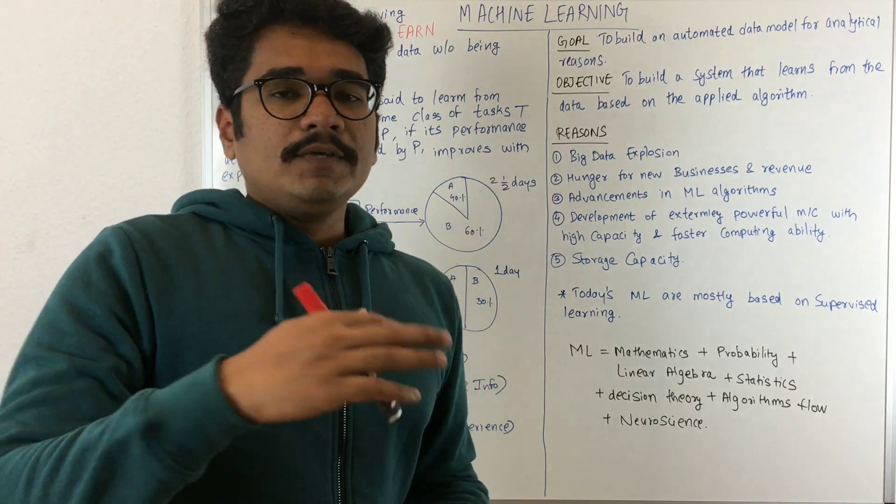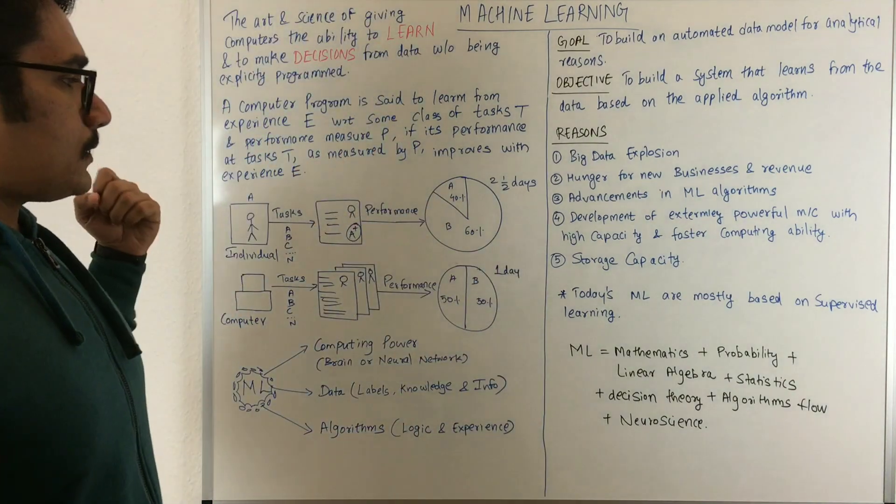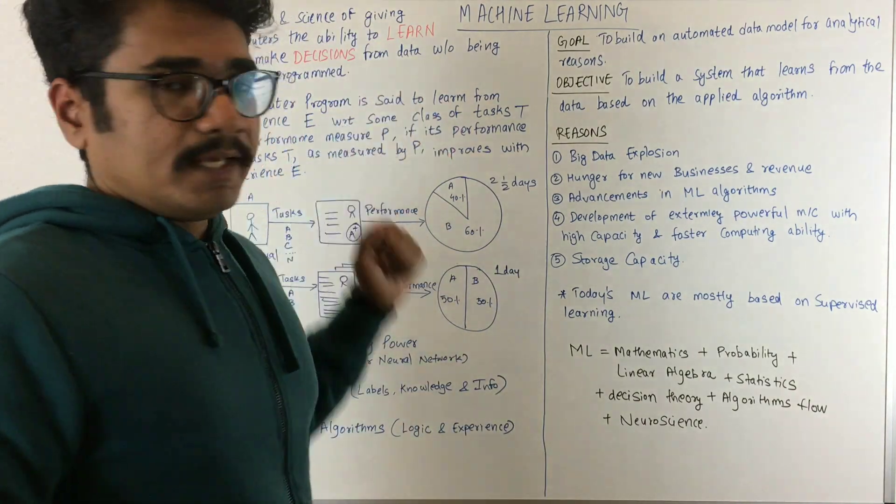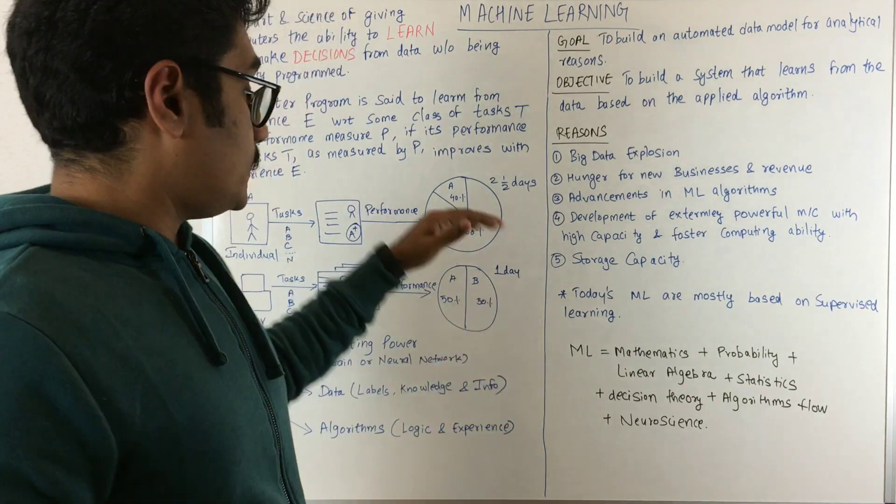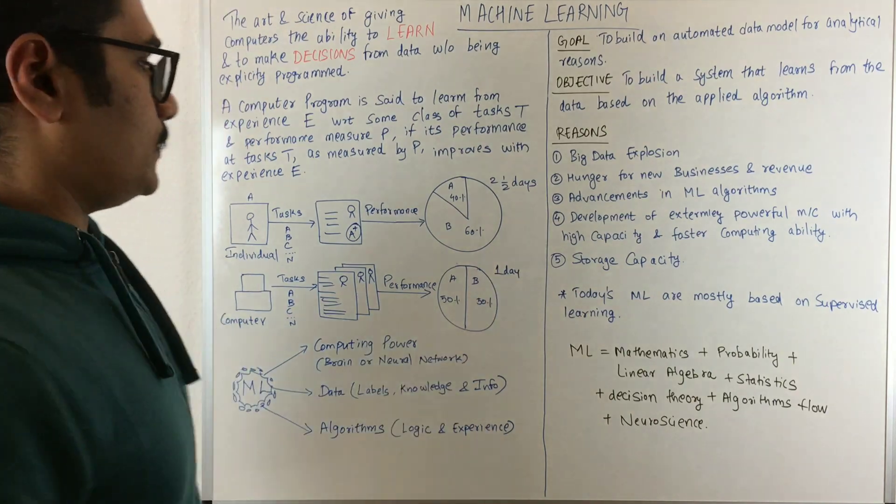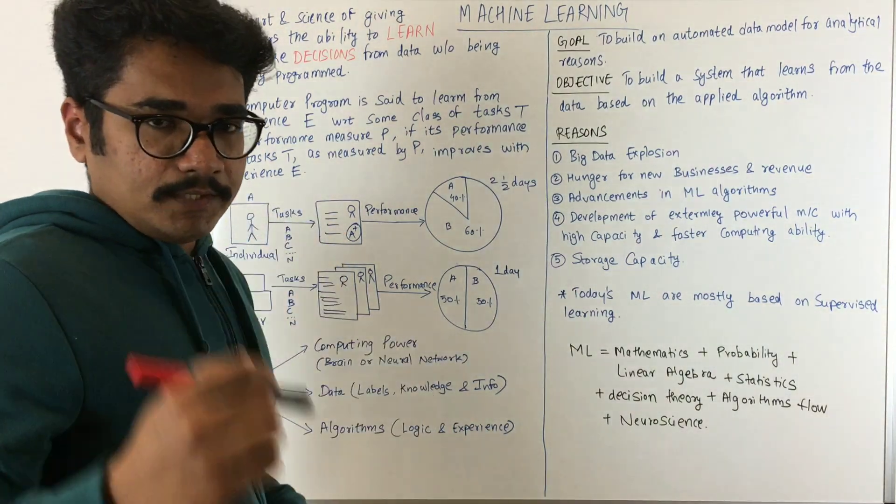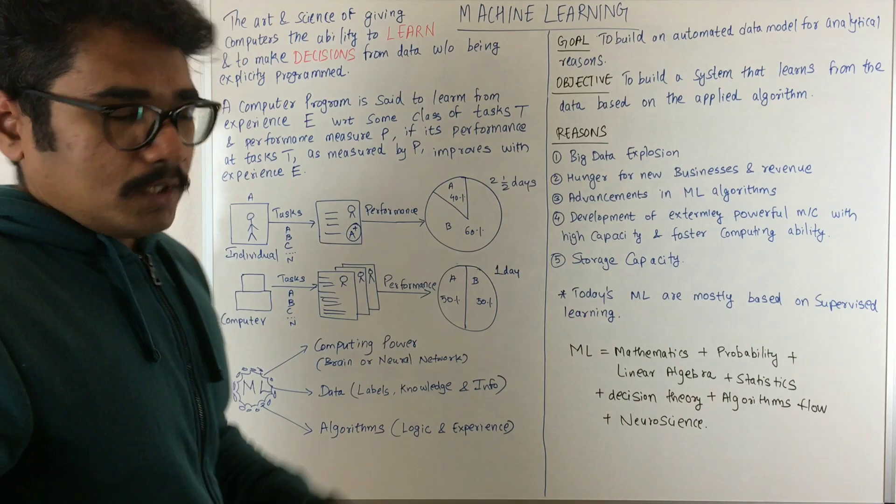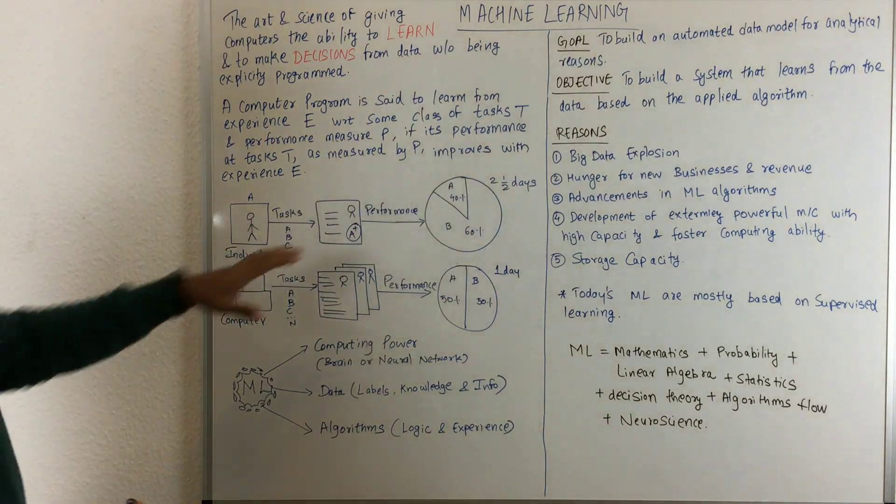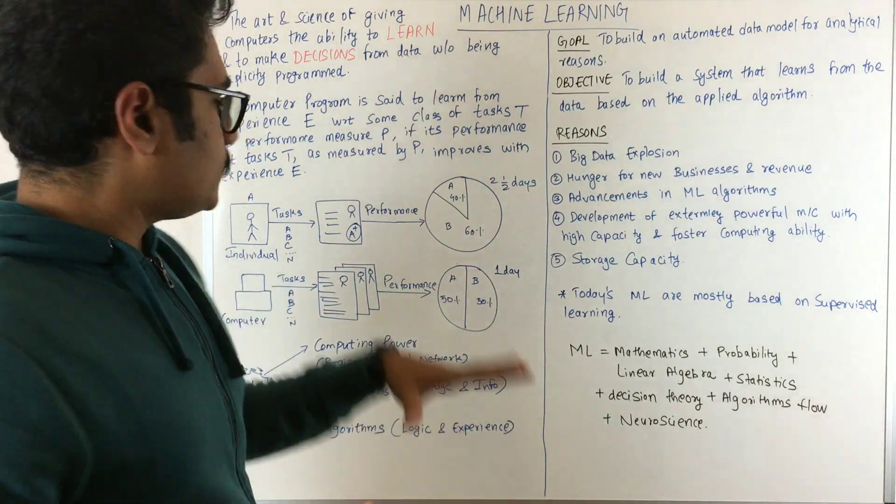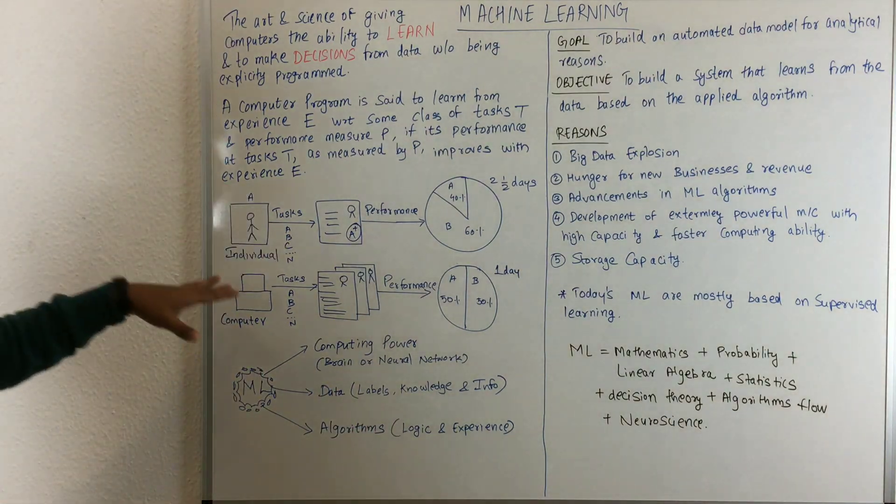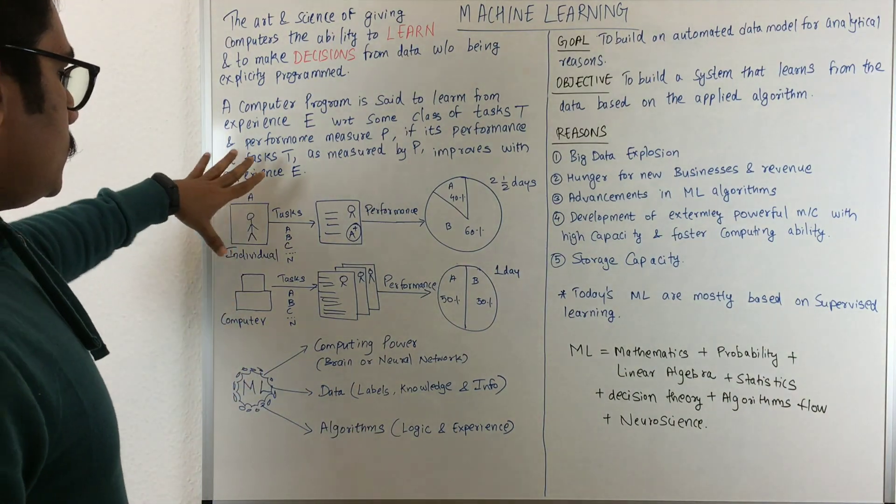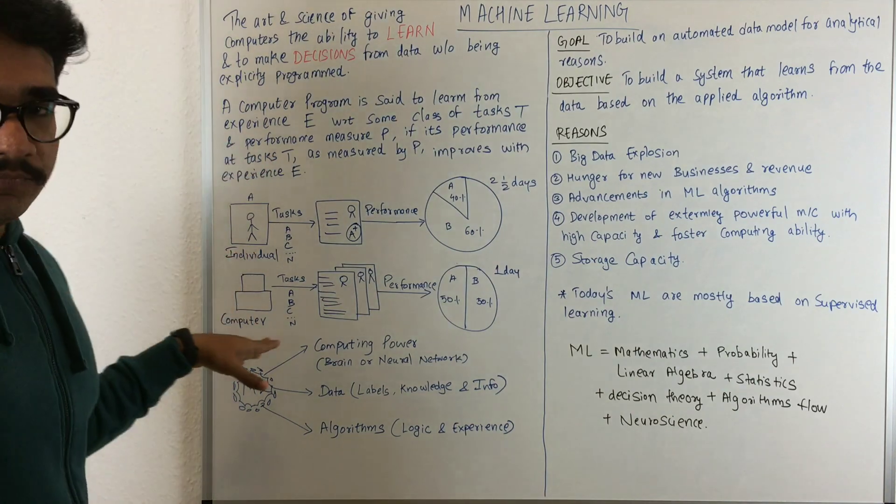For task A, he achieved an accuracy of 40%, and for task B, 60%. This individual took two and a half days to do that work, so he got experience on these two tasks. Now replace this individual with a computer program, and all the tasks done by the individual will be done by the computer program.